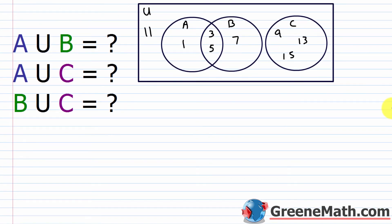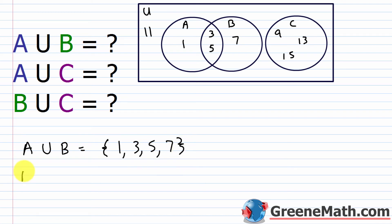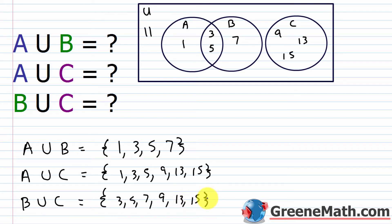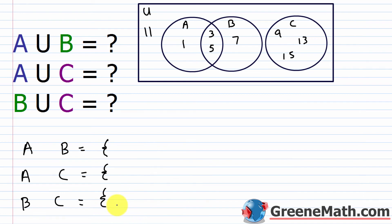Looking at our Venn diagram to answer these questions: A union B is all elements of A along with all elements of B — don't double-list — so that's 1, 3, 5, and 7. A union C is 1, 3, 5, 9, 13, and 15. B union C is 3, 5, 7, 9, 13, and 15. For the intersection: A intersect B is the overlap, which contains elements 3 and 5.